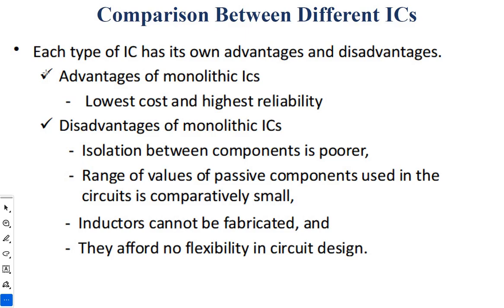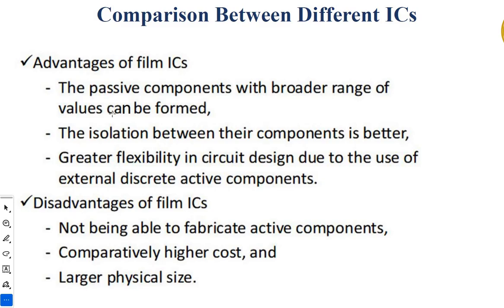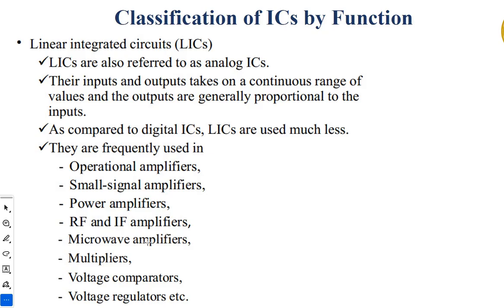Comparison between the ICs — each IC has its own advantages and drawbacks. Advantages of monolithic ICs: low cost and high reliability. Disadvantages of monolithic ICs: isolation between components is poor since all of them are placed very near to each other; range of values of passive components used in the circuit is very small; inductors cannot be fabricated, so there is no flexibility in circuit design. For film ICs, advantages are: passive components with a broader range of values can be formed, isolation between components is better compared to monolithic ICs, and greater flexibility in circuit design. Disadvantages: not able to fabricate active components; comparatively the cost is higher and the size is also a little bigger.